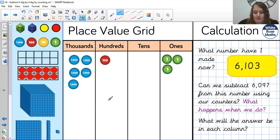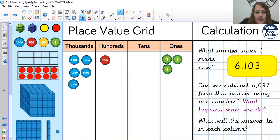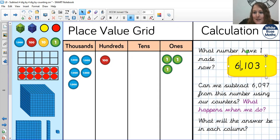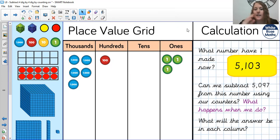5,103 then. I'm just checking because, again, Miss Fowler has made just an error because it was 5,103. What happens if we subtract 5,097? Again, I could start exchanging all of my counters to show you, but can we do it in a different way? Can I start at 5,097 in my head and count on?